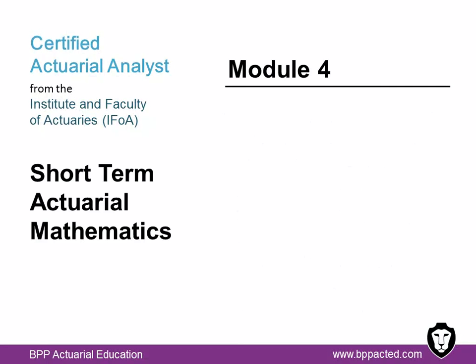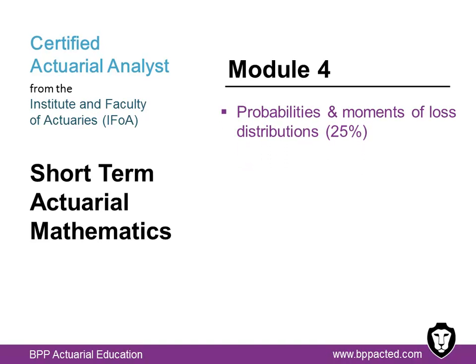Module 4 covers short-term actuarial mathematics, which provides a grounding in the mathematical and statistical techniques of particular relevance to non-life insurance. It's a two-hour exam plus 15 minutes of admin time administered by Pearson VUE, consisting of 65 multi-choice questions, with 125 to 150 hours of recommended study. The syllabus covers four topic areas. Probabilities and moments of loss distributions — i.e. distributions used to model losses or claims in non-life insurance, both with and without limits and risk sharing arrangements, i.e. reinsurance.